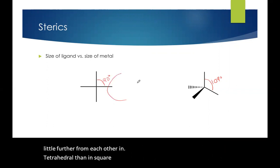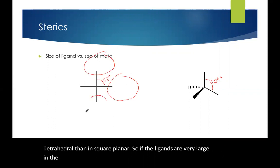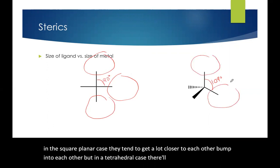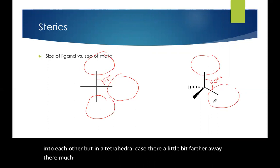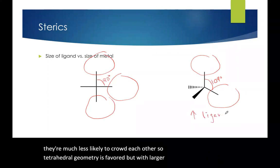So if the ligands are very large, in the square planar case, they tend to get a lot closer to each other and bump into each other. But in a tetrahedral case, they're a little bit farther away. They're much less likely to crowd each other. So tetrahedral geometry is favored with larger ligands that would otherwise crowd each other.